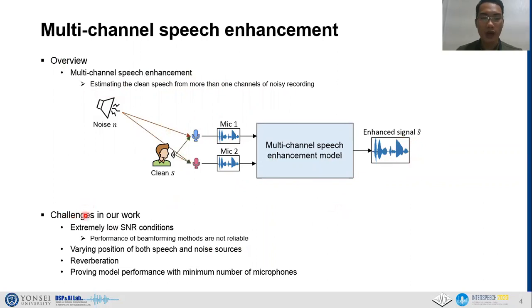Our paper tries to handle multichannel speech enhancement with four challenging problems. First, our model is capable of working in extremely low SNR conditions, in which beamforming-based methods show poor and unreliable performance. Second, our model robustness is validated by varying both speech and noise position. Next, our model can work in room conditions, taking the first order of reflection into account. The illustration of this is shown on the figure. Because of reverberation, the signals that all microphones receive are significantly distorted. Finally, we prove the performance of our model with minimum number of microphones with a small spacing between them.